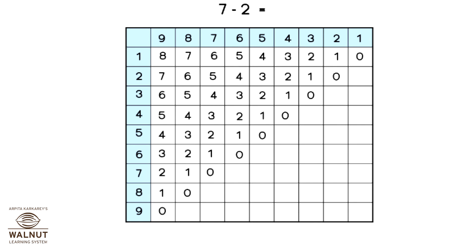Let's try doing another problem. Let's subtract 7 minus 2. We look for 7 in the top row, then we look for 2 in the first column. See where they meet? They meet at 5. That is your answer. So 7 minus 2 is equal to 5.